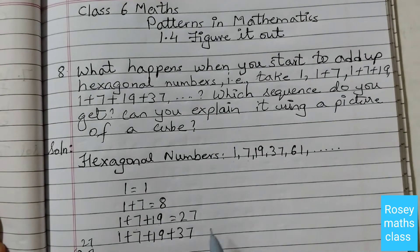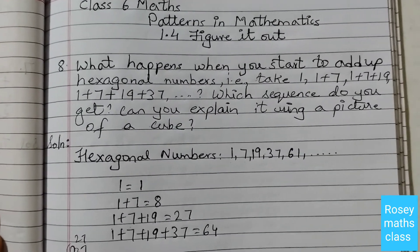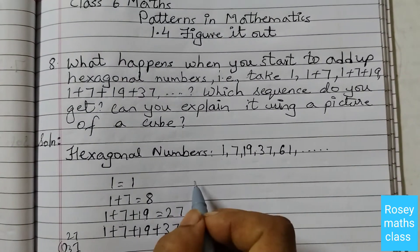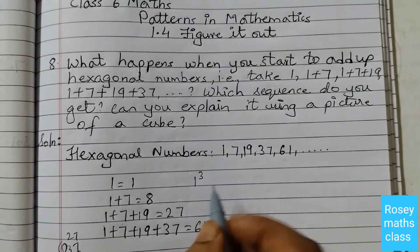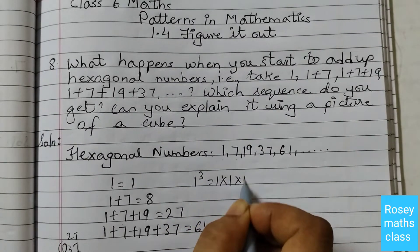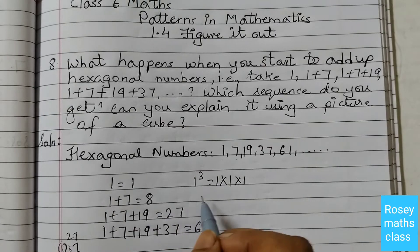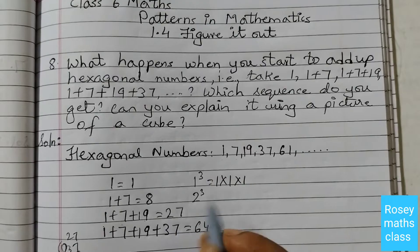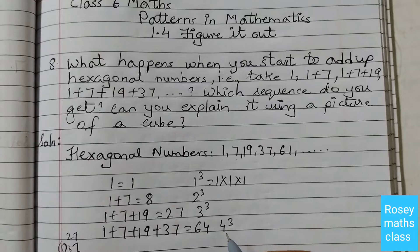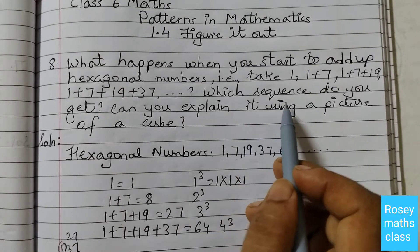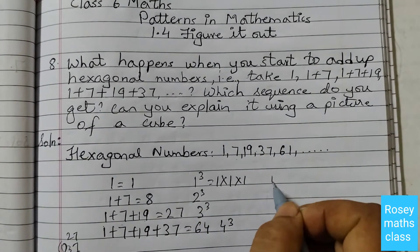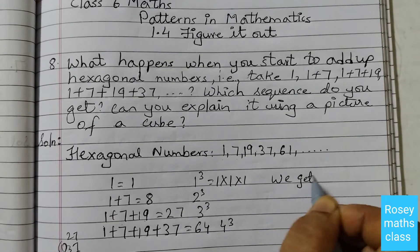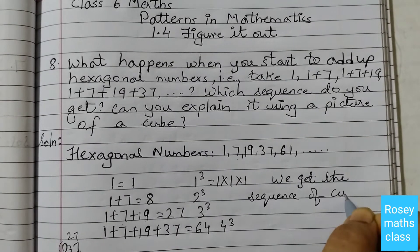That gives us 64. So the numbers we are getting are: 1, which we can write as 1 cubed; 8, which is 2 cubed (2 × 2 × 2 = 8); 27, which is 3 cubed; and 64, which is 4 cubed. That means we get the sequence of cubes.